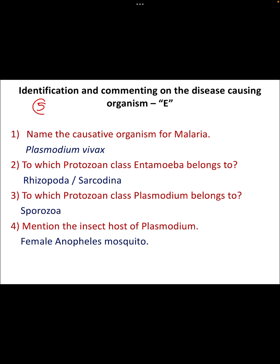In question number 5E, you will get a question on disease-causing organisms only. There are four organisms and four diseases you have to remember. Name the causative organism for malaria — that is Plasmodium vivax. Whenever the question is asked, you have to tell both words of the scientific name.